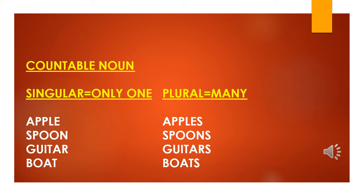For the plural nouns, we have apples - we have many apples. That's why we put S at the back of apple. So apples, spoons, guitars, boats.